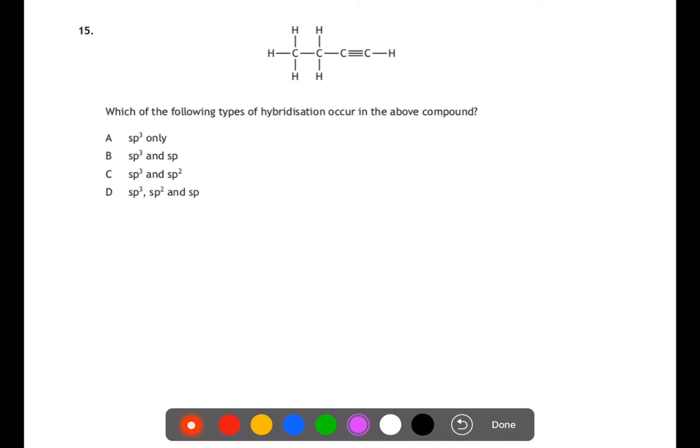Question 15. Which of the following types of hybridization occur in the above compound? Here we have single carbon to carbon bonds and a triple bond. In a single bond we have SP3 hybridized carbons, and in a triple bond we have SP hybridized carbons. This means that B is the answer.